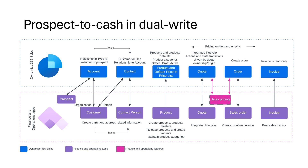Quotations and orders can be created and managed in either system, with updates synchronized in real-time. These objects can be priced using Sales or Supply Chain Management pricing capabilities. When Supply Chain Management is the pricing master for this integration, you can price your quotations and orders in Sales using dual-write on-demand or seamless pricing. More details on these pricing capabilities in the next slides.